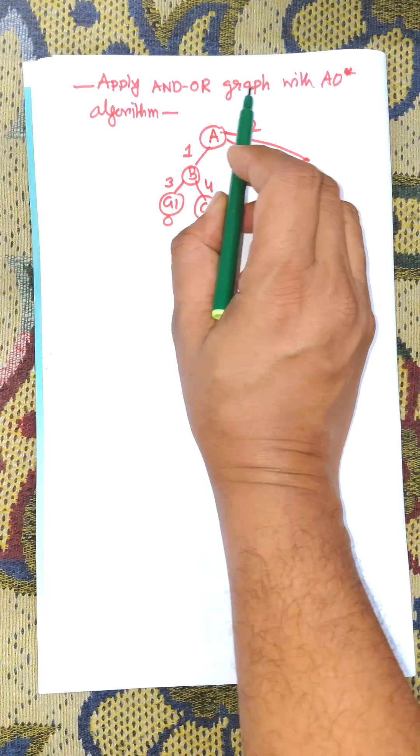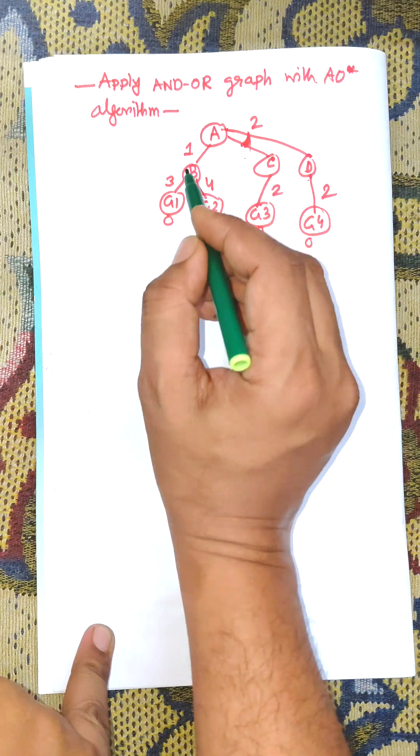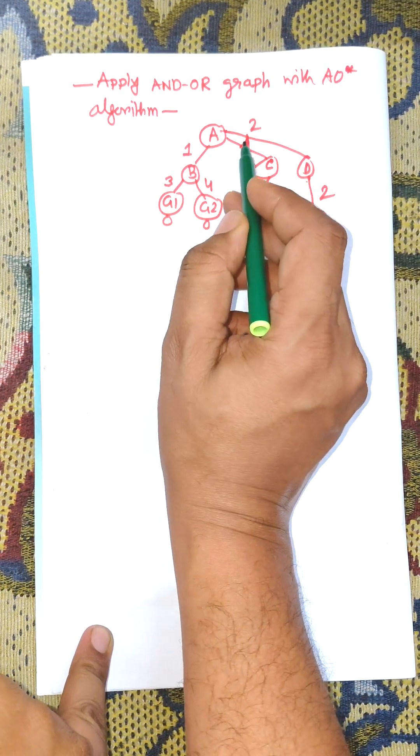Hi everybody, in this video I am going to discuss AND-OR graph with AO* algorithm. This is the AND-OR graph. This is OR graph and this one is known as AND graph.